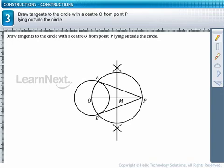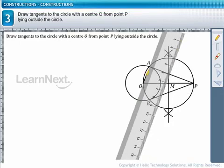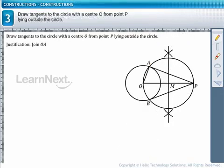Now, let us verify our construction mathematically. To verify this construction, let us draw a line to join the points O and A. Now, consider angle PAO. It is an angle in the semicircle and therefore equal to 90 degrees.